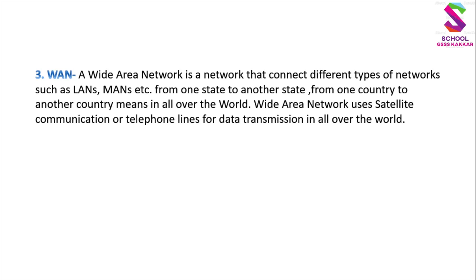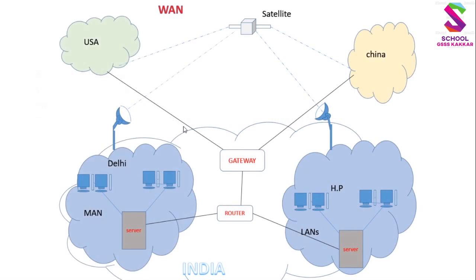Wide Area Network uses satellite communication and telephone lines for data transmission all over the world. WAN satellite को भी उपयोग करता है — communication के लिए — और telephone lines को भी उपयोग करता है — data के transmission के लिए पूरी दुनिया में। यह wide area network satellite और telephone lines दोनों का उपयोग करता है।